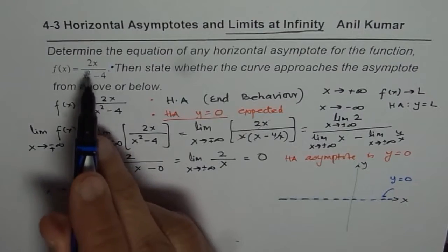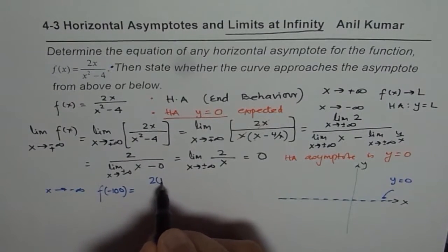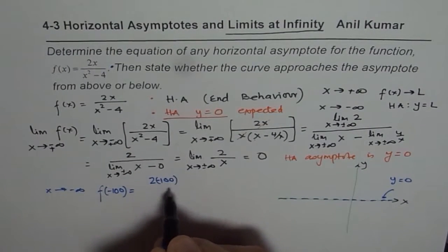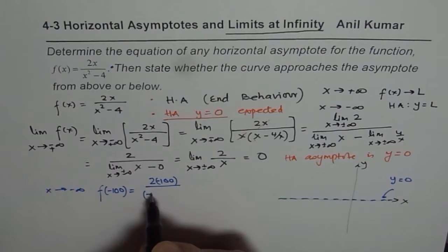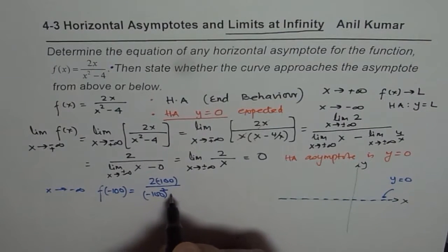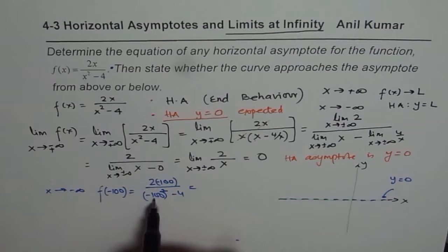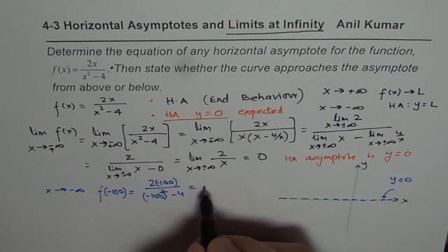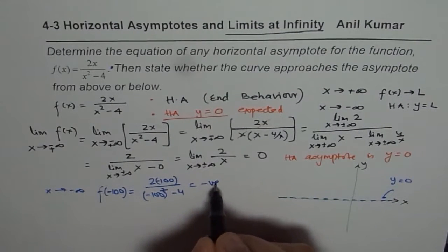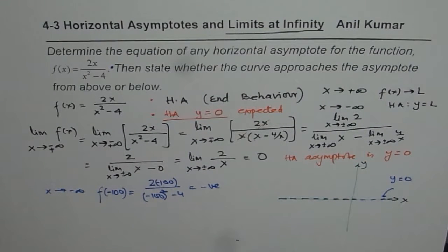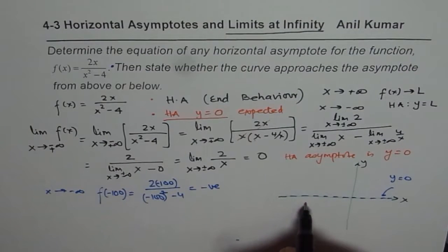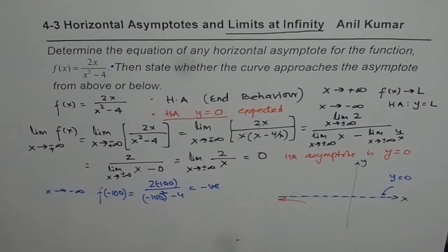If we substitute x = -100 into f(x), we get 2 times (-100) divided by (-100) squared minus 4. The denominator — 100 squared — is positive, so the denominator is positive, but the numerator is negative. So this value is negative. Since the value is negative as we approach negative infinity, the curve is approaching the horizontal asymptote from below.